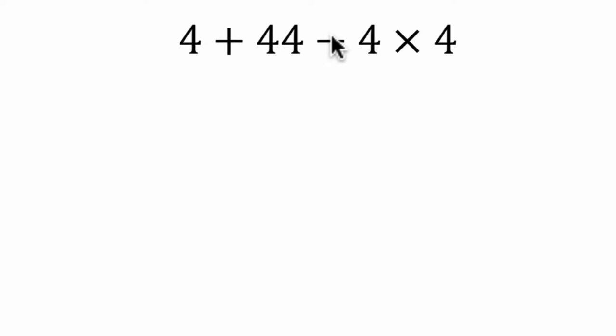With addition and subtraction, that comes after multiplication. So I'm going to rewrite this. We have four plus forty-four, then we're subtracting sixteen, and I'm getting sixteen by multiplying four times four.